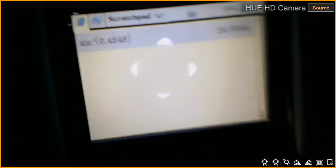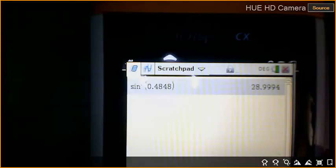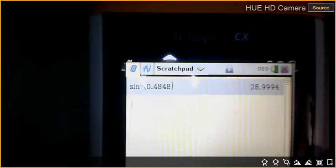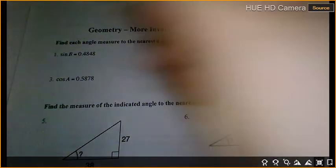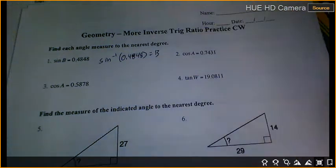Why did you use inverse and not type the number of sine? Because it says sine B equals that number. So in order to find it, I have to do inverse sine of 0.4848 will equal B. And I'm just going to round up. I'm going to say it's 29 degrees.